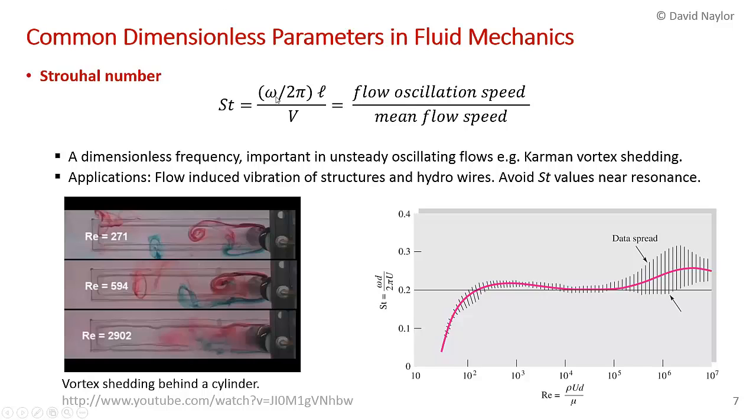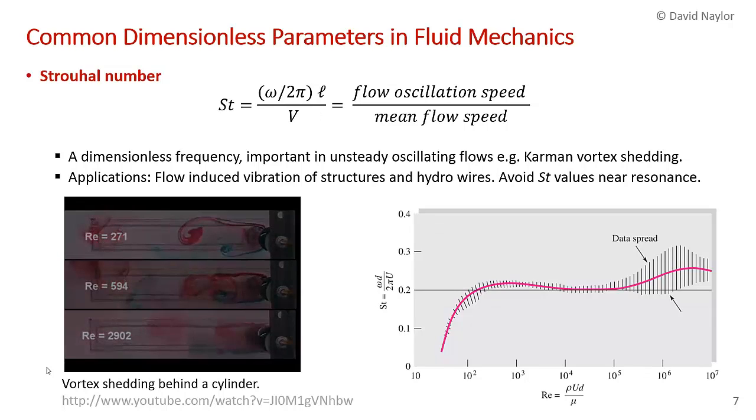The Strouhal number is omega over 2 pi, so the omega is a frequency, again a characteristic length. It's the oscillation speed over the mean flow speed, a dimensionless frequency. I found a video of vortex shedding from a cylinder at different Reynolds numbers. At low Reynolds numbers you get very low oscillation frequency. The frequency of vortex shedding is low. At roughly 10 times higher the Reynolds number, we get much higher oscillation frequency. You can really see the low oscillation frequency at low Reynolds number and the high oscillation frequency at high Reynolds number.